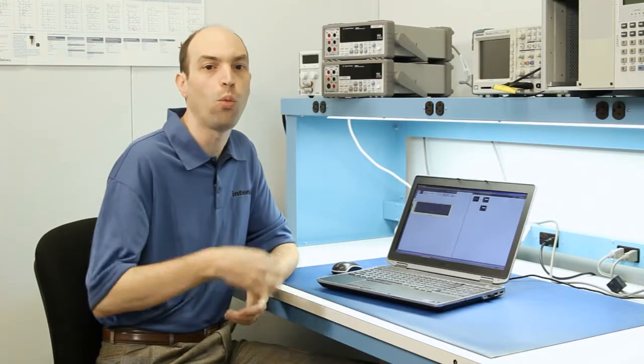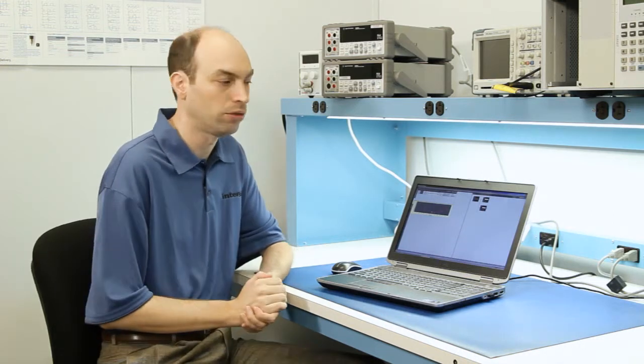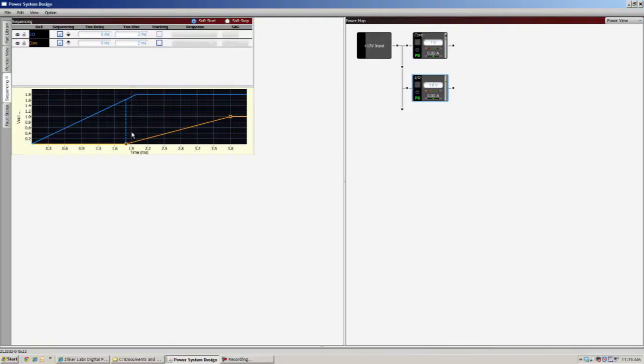So now it's event-based. It waits for the power grid threshold to occur before the next rail starts. If we want to change the order of these two devices, you can use these up-down arrows. Maybe we want the core to sequence first. And now you can see once you reach the power grid threshold for the core, the IO rail will start to sequence up.